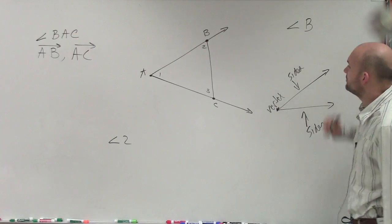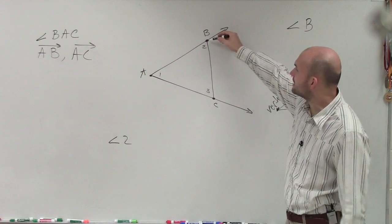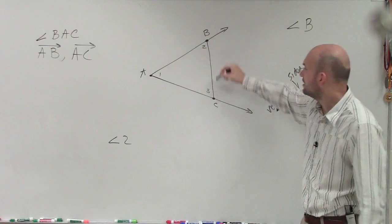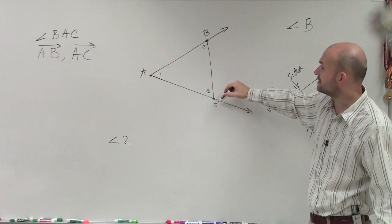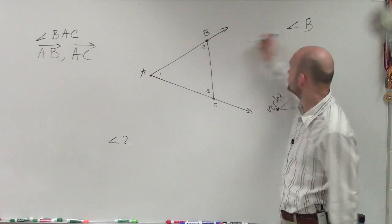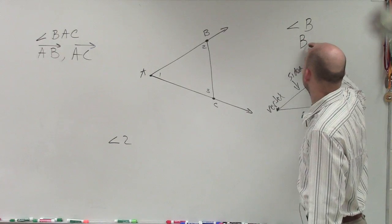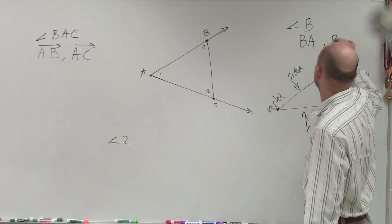Now, let's go to angle B. What are the side lengths that create angle B? With angle B, we have going down to A and down to C. Well, our two side lengths, these aren't rays. You can say they're BA and BC.